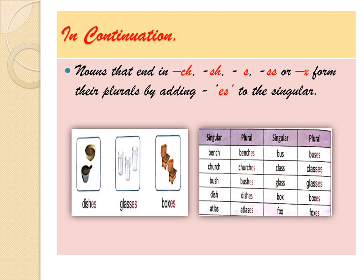Continuing rule two examples: atlas/atlases, bus/buses, class/classes, glass/glasses, box/boxes, fox/foxes. The words fox and box end in X, so we added ES. Nouns ending in CH, SH, SS, or X change to plural when we add ES to that word.